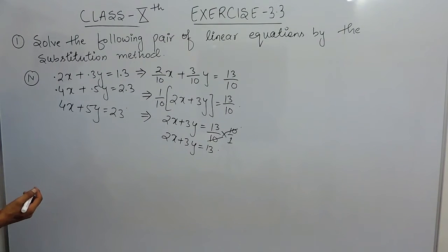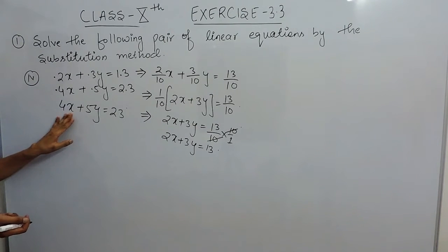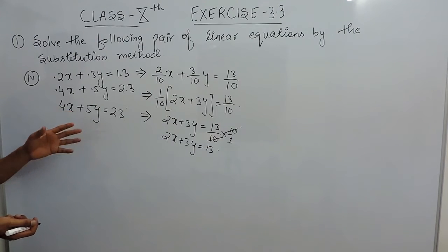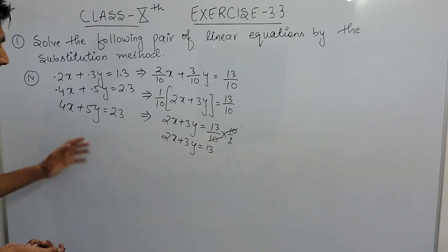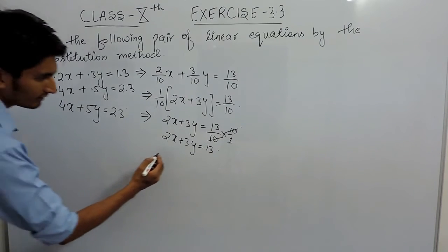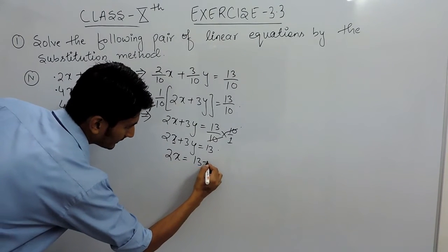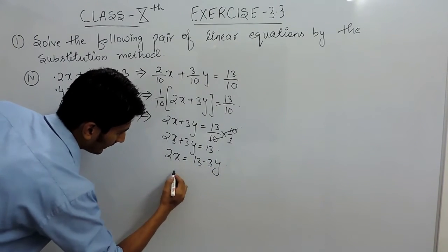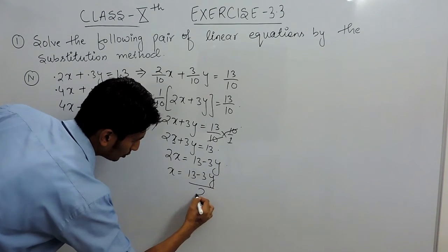In the substitution method, we find the value of any variable from one equation and put that value into the other equation. I am finding the value of x from the first equation. So the value of x must be 13 minus 3y upon 2.